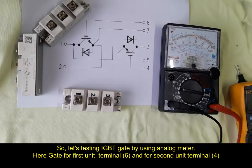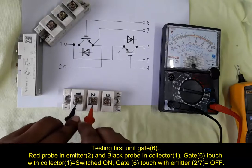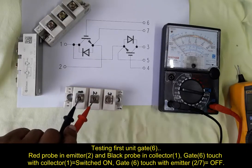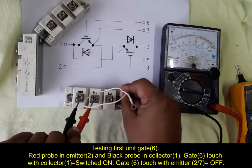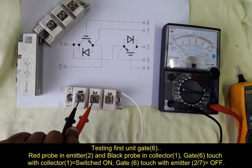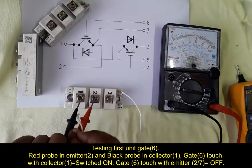So red probe in emitter 2 and black probe in collector 1. From gate 6 touch with collector 1. Meter displays switch on.